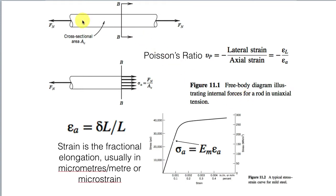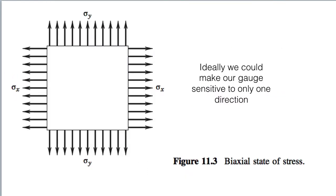If we stretch a beam, it'll get longer and it'll get narrower by Poisson's ratio. The strain is the fractional elongation — we're measuring the change in length per unit length of the material. In solid mechanics, there are biaxial or triaxial stress states, and it can be difficult to resolve an individual strain direction. So we're going to try to make our gauges sensitive to only one direction so we can separate the stresses into their principal directions.